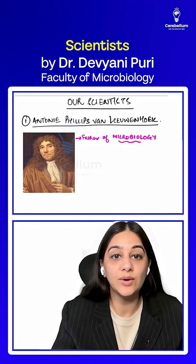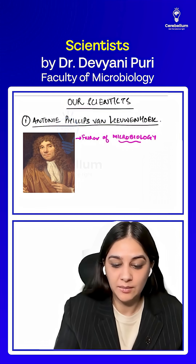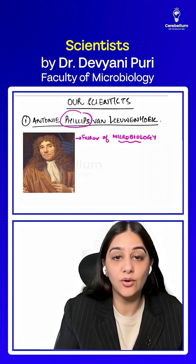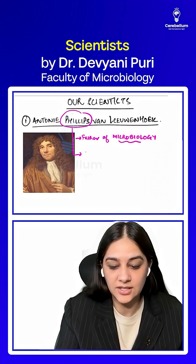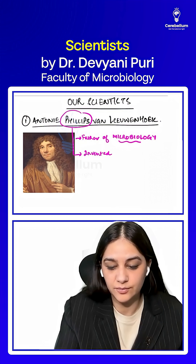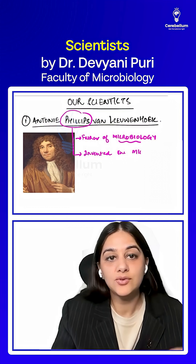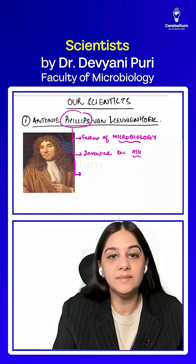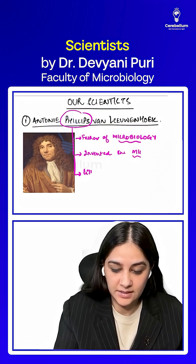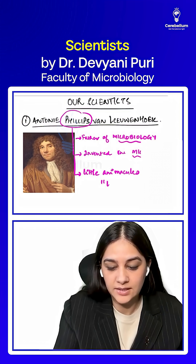If you have to do anything in microbiology, what do you require? You require a microscope. A useful memory trick: Philips is a company that makes a lot of electronic materials, and Philips also makes microscopes. He actually invented the microscope, and that is why he is known as the father of microbiology. Under the microscope, when he saw the organisms, he called them little animacules, which directly translates to little animals.